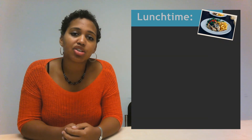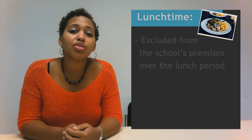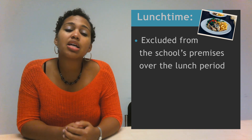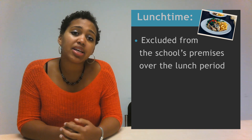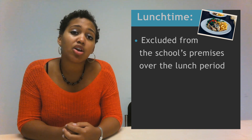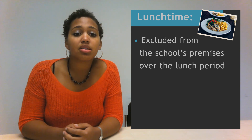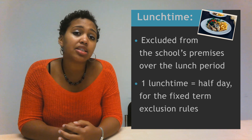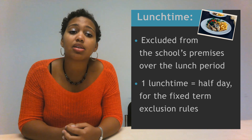Our third type of exclusion is the lunchtime exclusion, where a pupil is excluded from the school's premises over the lunch period. This can be because that pupil's behaviour is disruptive over lunchtime. One lunchtime counts as a half day for the purposes of calculating school days for a fixed term exclusion.